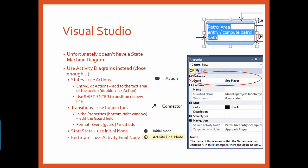Unfortunately, Visual Studio doesn't actually have a state machine diagram, but we can use activity diagrams and they're close enough. For states, use the action tool. If you double click on the action, you can edit the action's description. Put the name of the state here. If you use shift enter, you can move down to the next line to add entry or exit actions to the state as necessary.